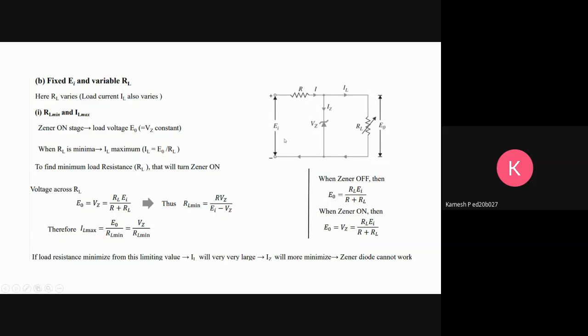When Ei is fixed, you have to calculate the Zener and load voltage as E0. When RL is minimum, IL is maximum since E0 is fixed.